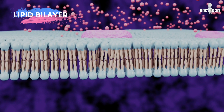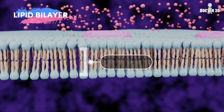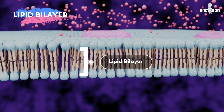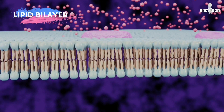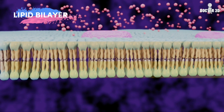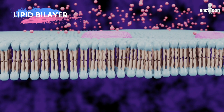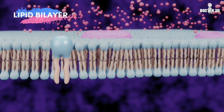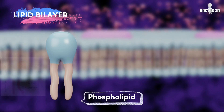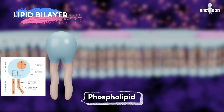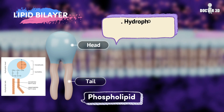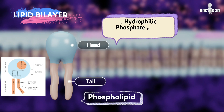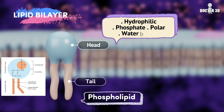The most important and fundamental component of the membrane is the lipid bilayer. It is composed of two layers of lipid molecules organized in two sheets — that is why it is called the lipid bilayer. Each lipid molecule is made of phospholipid, containing a head region and a tail region. The head is hydrophilic because it contains a phosphate group; it is polar and water-soluble.